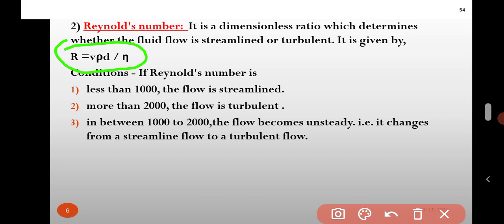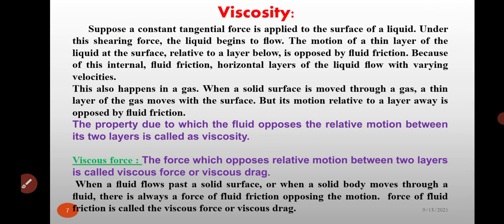Condition: if Reynolds number is less than 1,000, the flow is streamlined. More than 2,000, the flow is turbulent. In between 1,000 and 2,000, the flow becomes unsteady. That is, it changes from a streamlined flow to a turbulent flow.